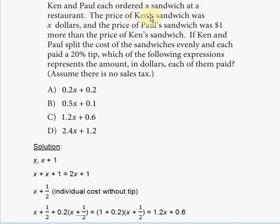at a restaurant. The price of Ken's sandwich was X dollars, and the price of Paul's sandwich was one dollar more than the price of Ken's sandwich. If Ken and Paul split the cost of the sandwiches evenly and each paid a 20% tip, which of the following expressions represents the amount in dollars each of them paid? Assume there's no sales tax.